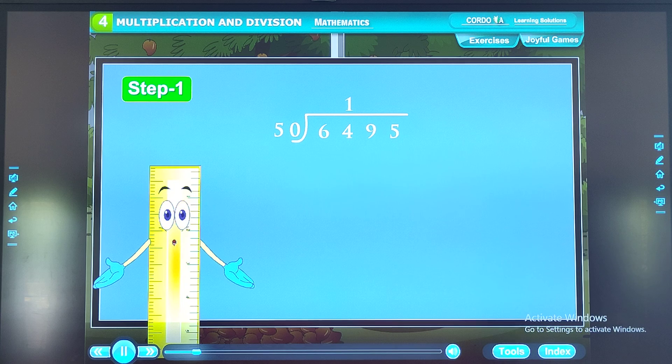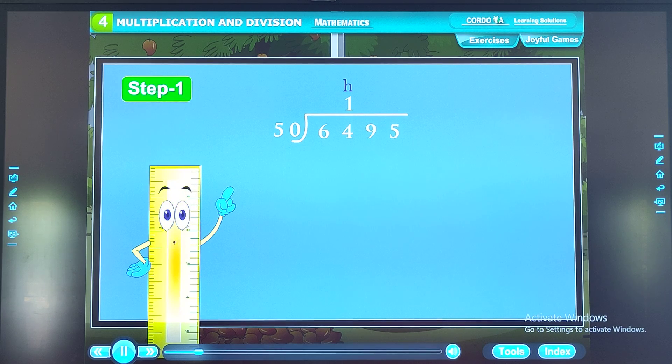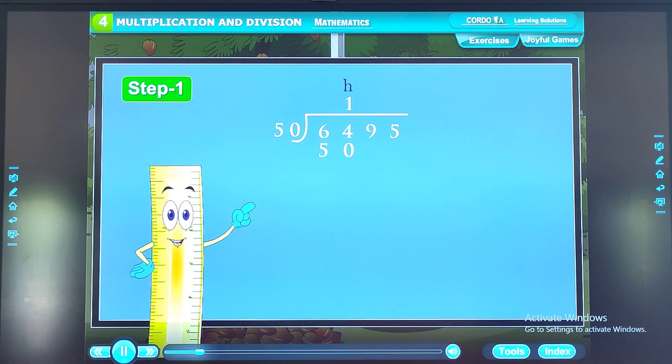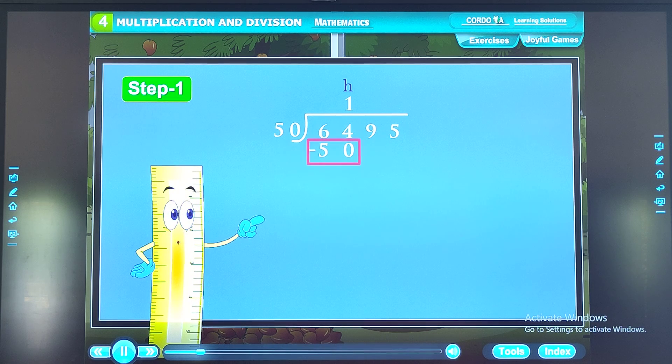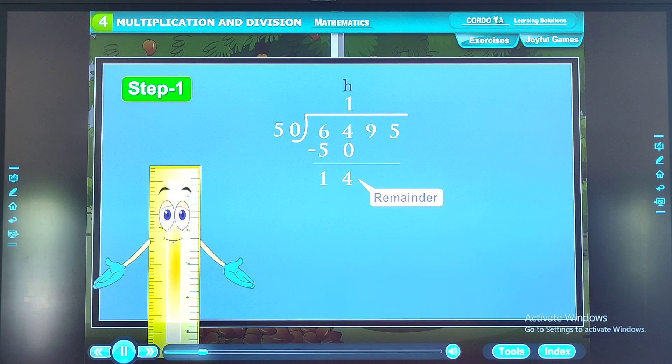6 thousands plus 4 hundreds is equal to 64 hundreds. 50 goes one time into 64. So we write 1 in the hundreds place in the quotient and write 50 below 64. On subtracting 50 from 64, we get 14 as remainder.